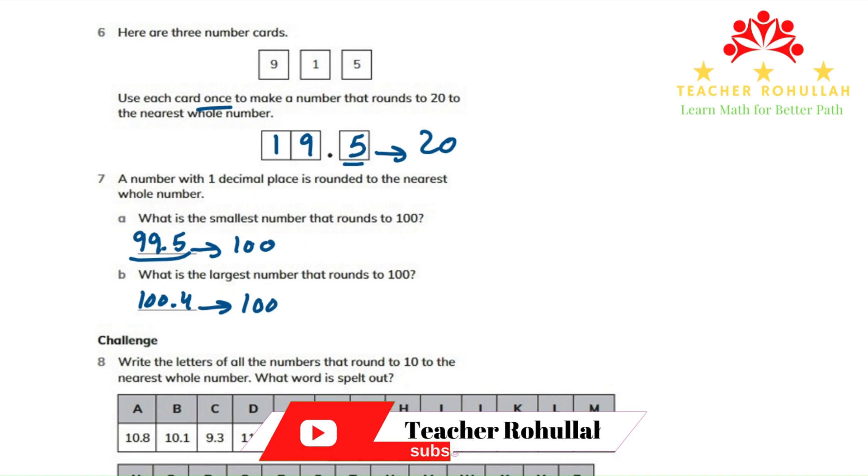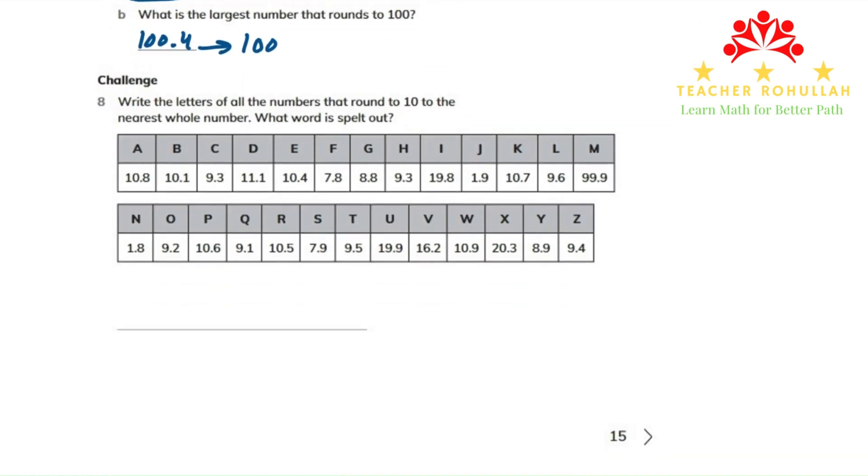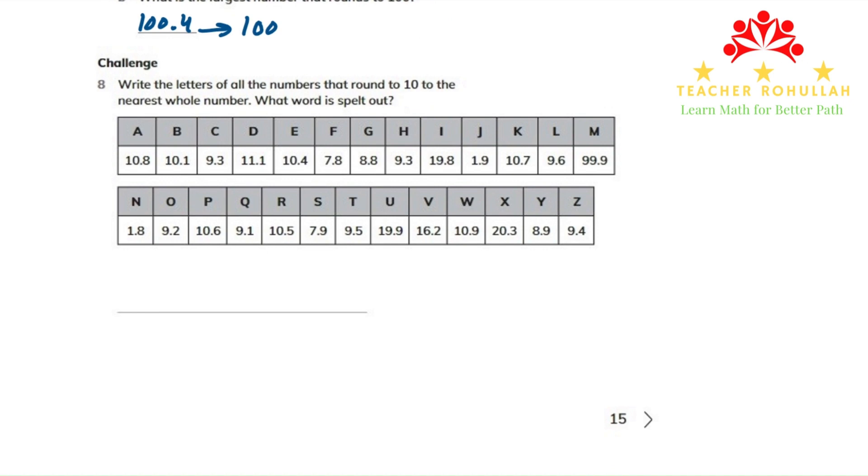We will now move to question number 8. Let me scroll down a bit. In this question, it says, let's write the letters of all the numbers that round to 10 to the nearest whole number. What is the word spelled out? The numbers that do not round to 10, I will cross.